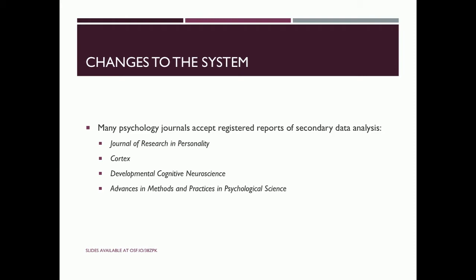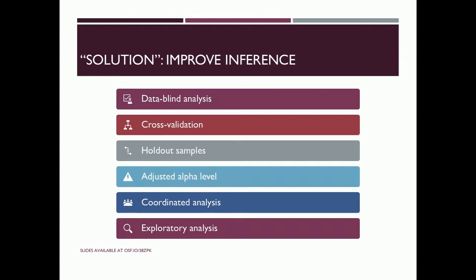The other route when dealing with challenges of secondary data analysis is to improve our inferences. Computer scientists in machine learning have pointed out a number of new techniques increasingly adopted in personality psychology, including data-blind analysis, cross-validation, and holdout samples. We can borrow these practices to just improve our inference — to be more conservative with our estimates, use a more data-driven approach, and differentiate when we're making choices based on what we already know.